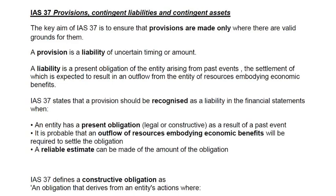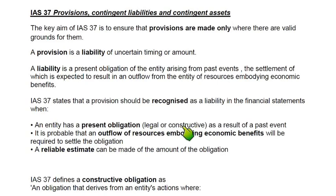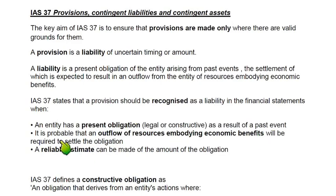IAS 37 states that a provision shall be booked as a liability in the statement of financial position when three conditions are met. The first condition is that an entity has a present obligation — whether legal or constructive — as a result of a past event. Because of that past event, we have now incurred a liability and there is a present obligation for us to pay a certain amount.